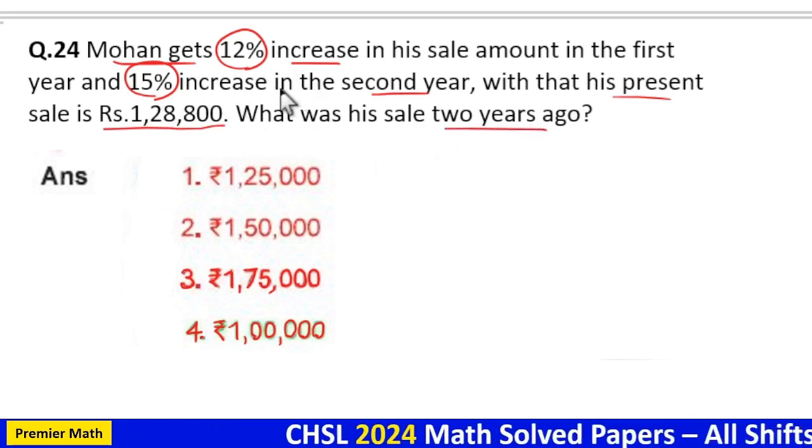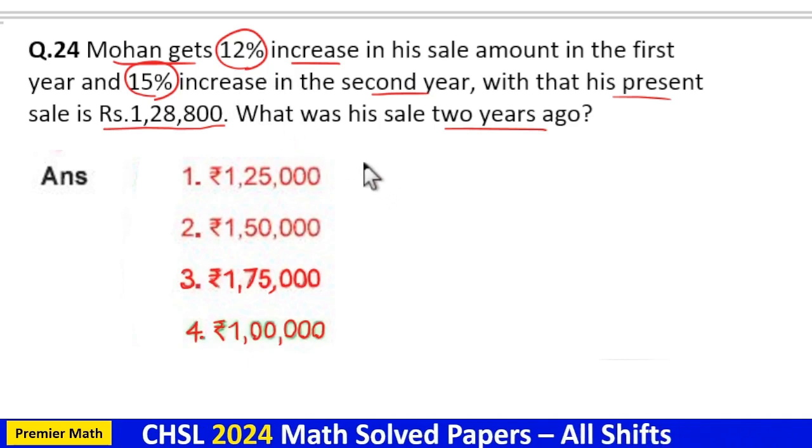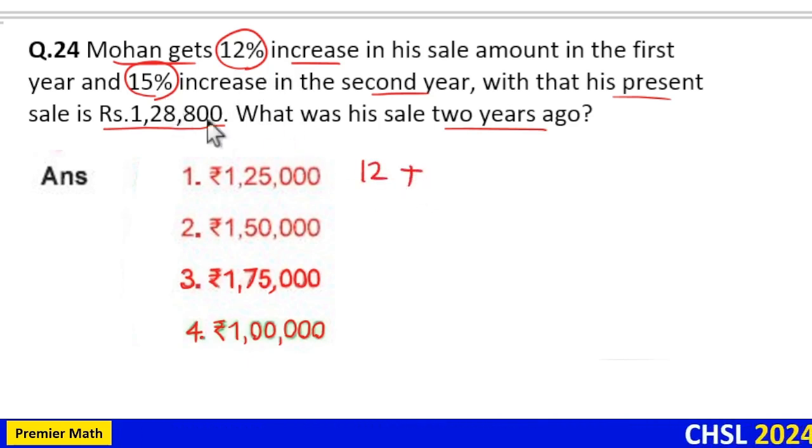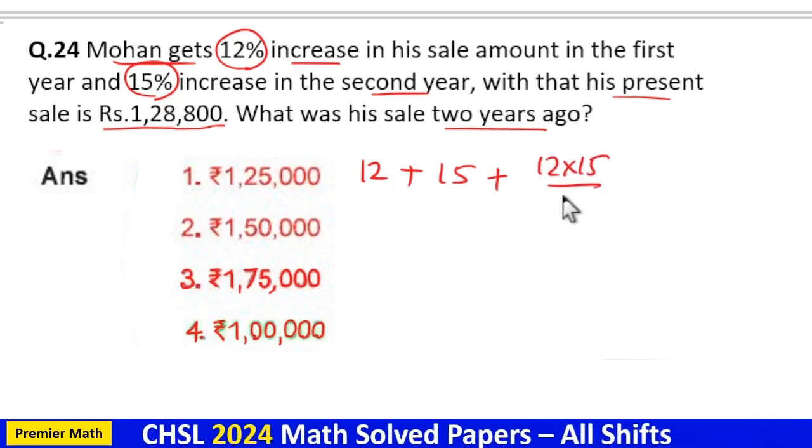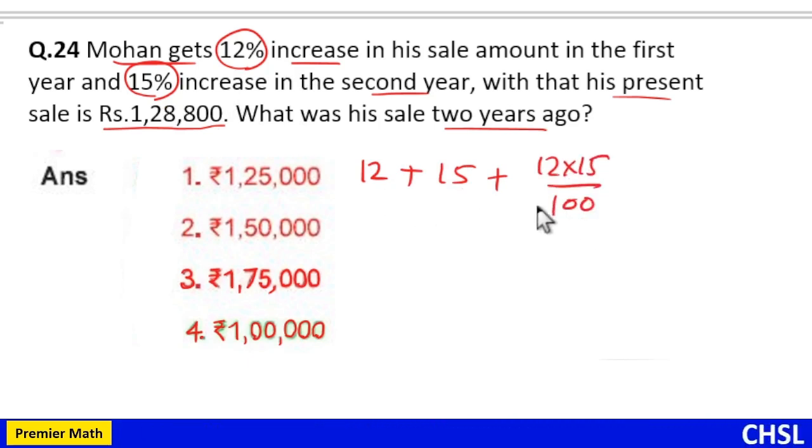In first year it is 12 percentage, in second year it is 15 percentage, plus 12 into 15 divided by 100. That is a plus b plus ab by 100.